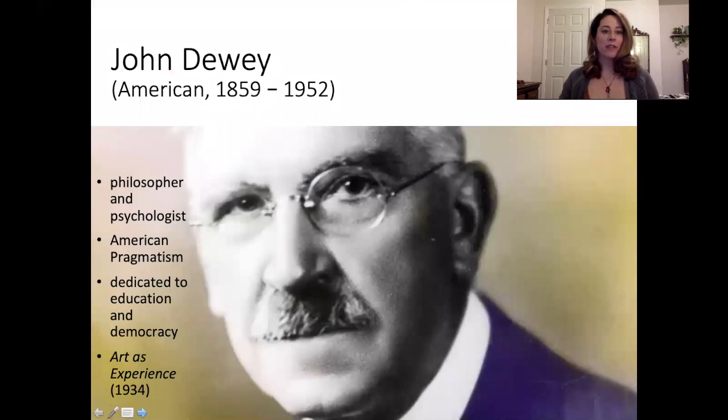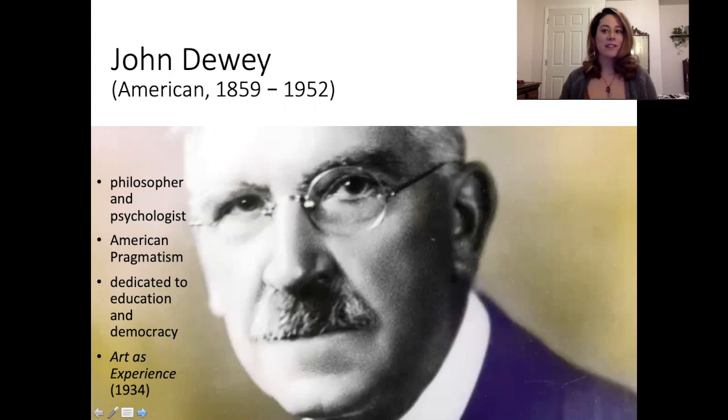John Dewey is an American philosopher and psychologist, and also a social activist. He comes from the philosophical school we call American pragmatism, although he preferred to call it social naturalism. American pragmatism focuses on how philosophy can be of practical use in our everyday lives and in changing our social world. He was very dedicated to education and was a big believer in democracy, which you can get some sense of in this chapter.